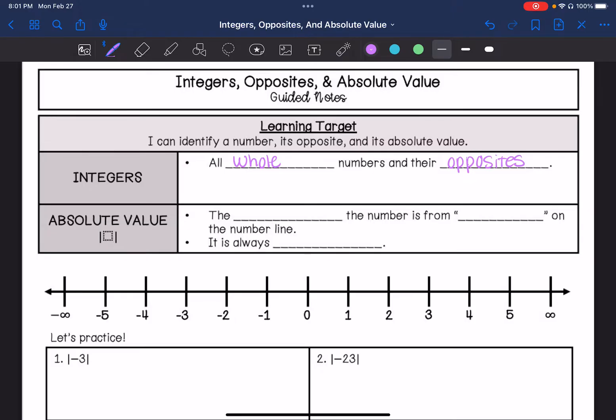Absolute value is the distance the number is from zero. It's the distance it is from zero on a number line, and its absolute value is always positive.